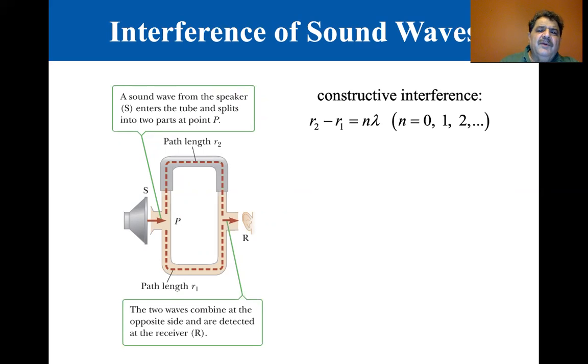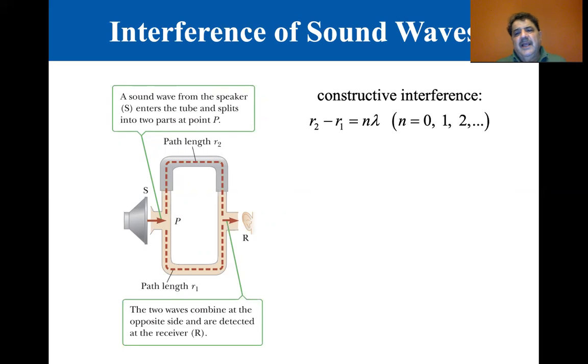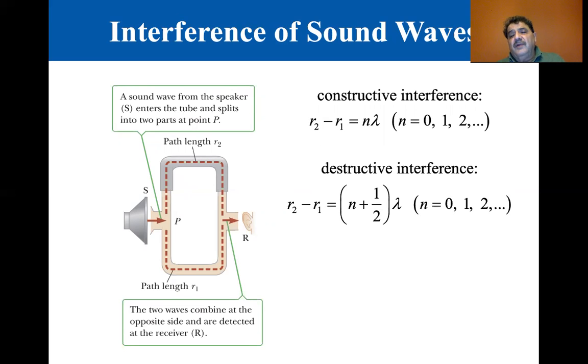Now what if you were to lengthen that tube, just kind of like a trombone tube where you just extend it? You would have constructive interference at R2 minus R1 at intervals of lambda. So at N equals zero, of course, that's with them both being lambda. At one lambda, you'd get constructive interference, at two, and so forth.